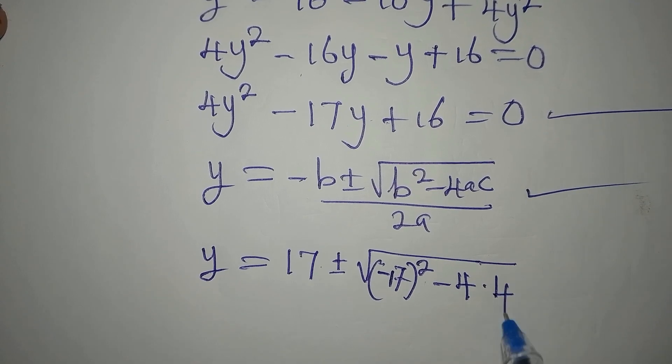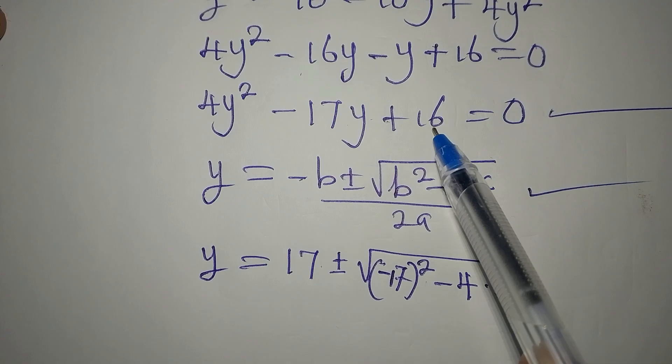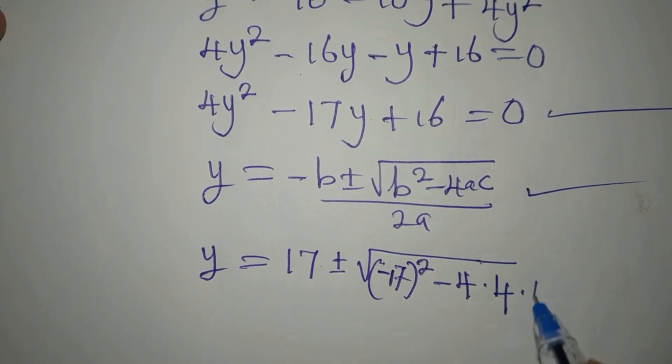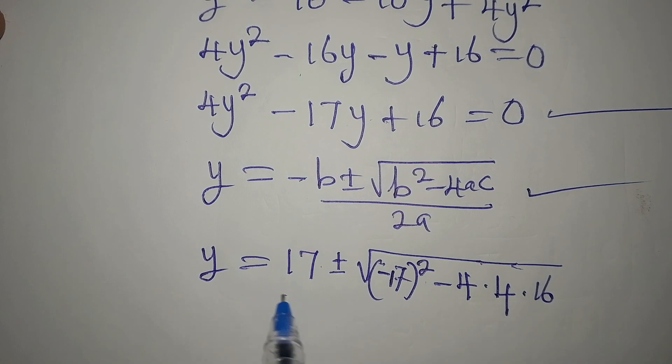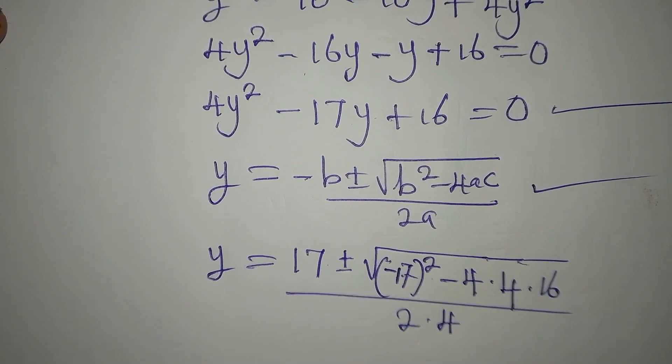Then times 16, because c is 16, then all of this will be divided by 2 times 4, because a is 4.